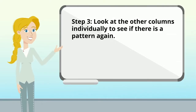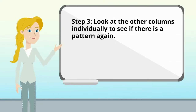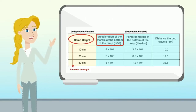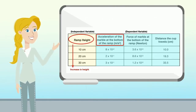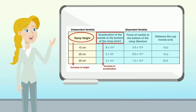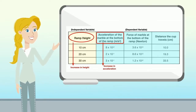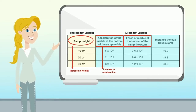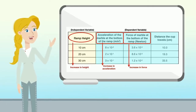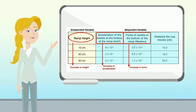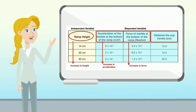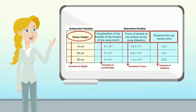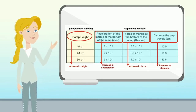In step three, we look at the other columns individually to see if there's a pattern. First, acceleration of the marble at the bottom of the ramp — the numbers are getting bigger as it goes down, so there's an increase in acceleration. For force of the marble at the bottom of the ramp, the numbers are getting bigger as they go down, so again an increase in force. And for distance the cup travels, the numbers are getting larger as it goes down, so there's an increase in distance.